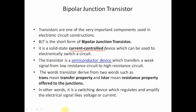The word transistor is derived from two words: 'trans' and 'register'. Trans means transfer property and register means the resistance property offered to the junction. In other words, it is a switching device which regulates and amplifies the electrical signal, such as voltage or current.